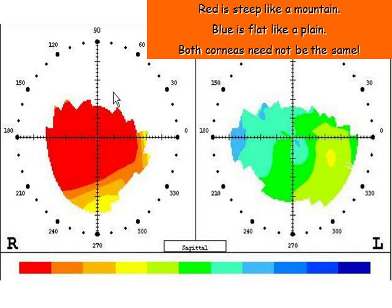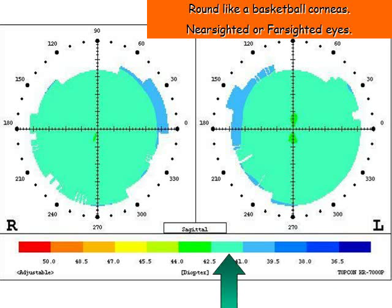These are the front curves of your cornea, the front clear window that lets the light into your eye. It is the most powerful optical surface, so you would like to know if it is normal and stable. It is like a topographical map — red is steep like a mountain, blue is flat like a plane. These images are light green in the middle with normal curves, fairly uniform, indicating a round eye shaped like a basketball, meaning the eye is just slightly nearsighted or farsighted with very little or no astigmatism.